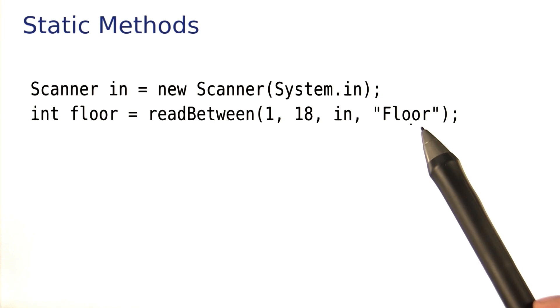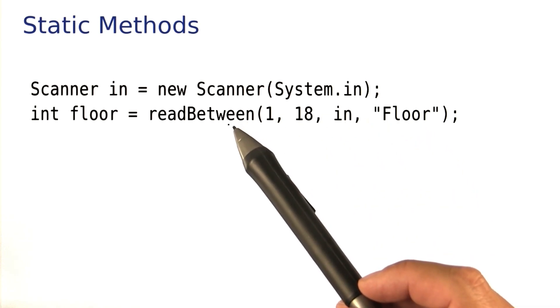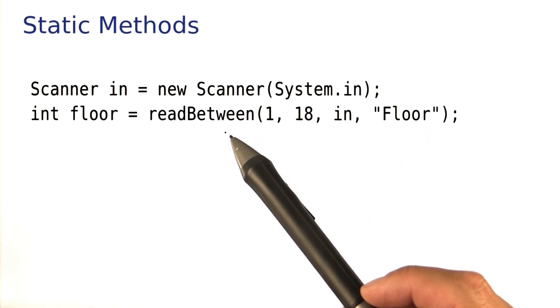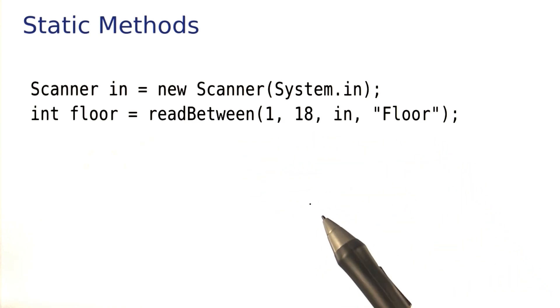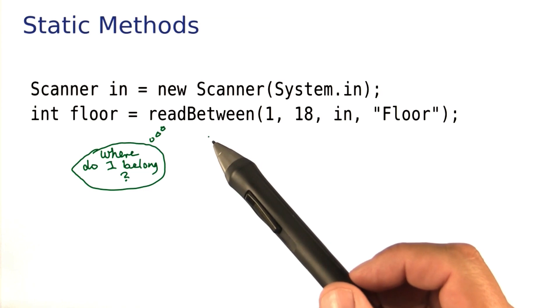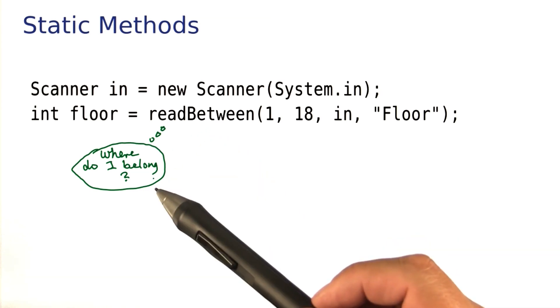And of course the reason I want that is, then I can reuse the read between method again, when I want to read some other value that's maybe between 1 and 100, and maybe it's a temperature. So like so many of us, the read between method is probably wondering, where do I belong?